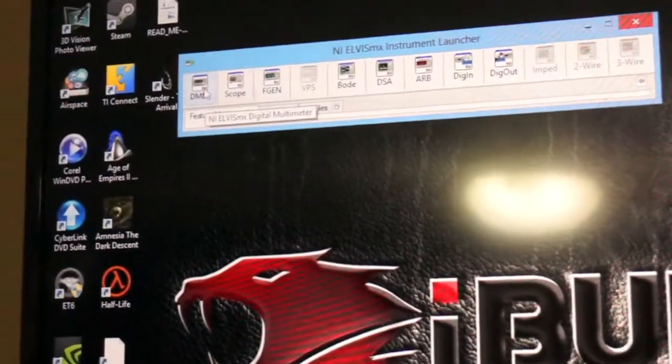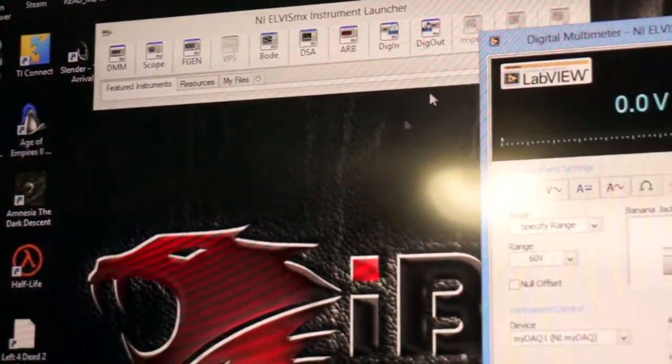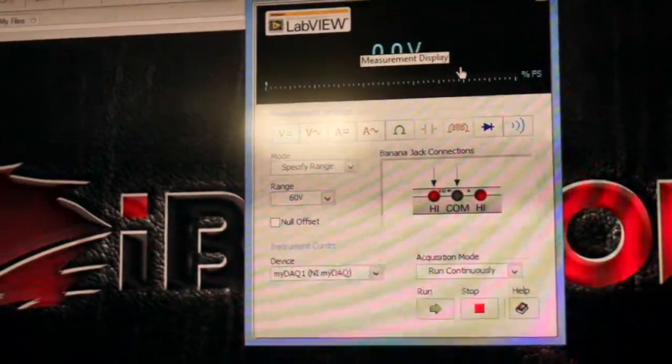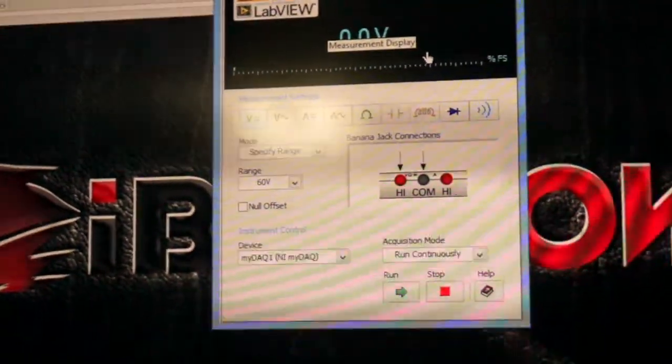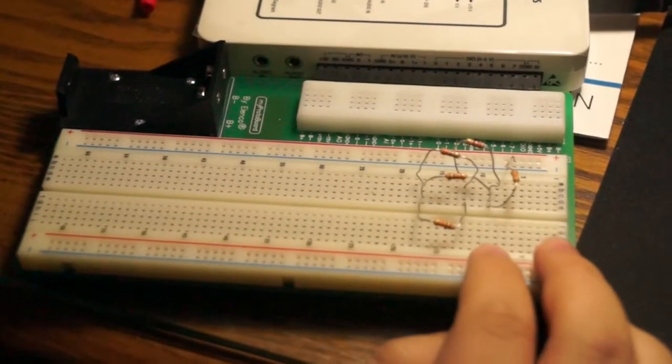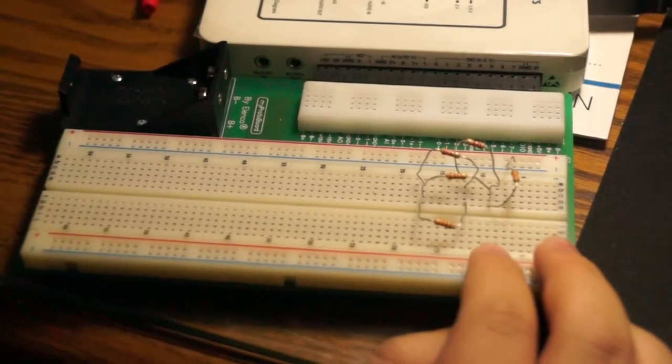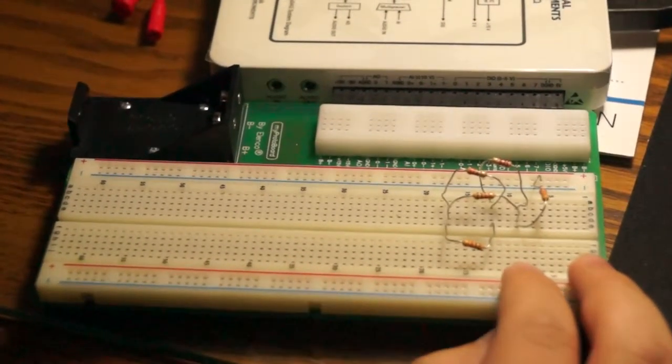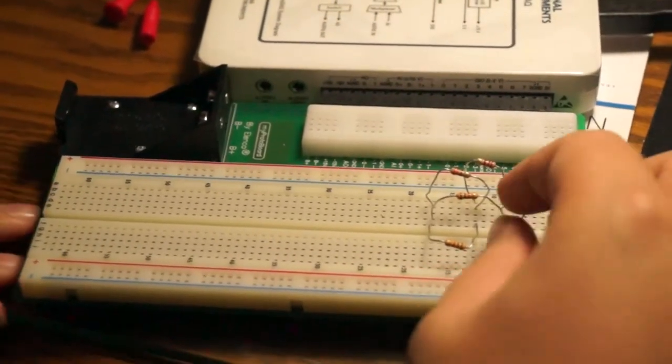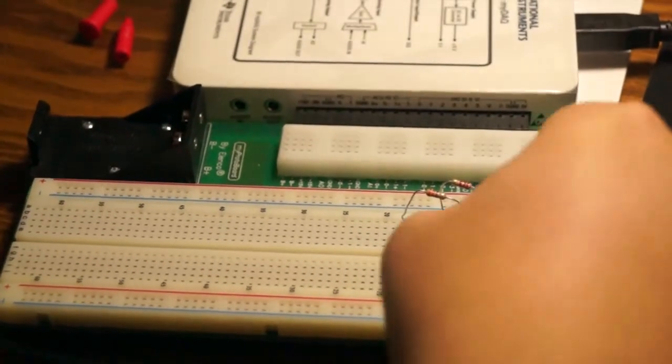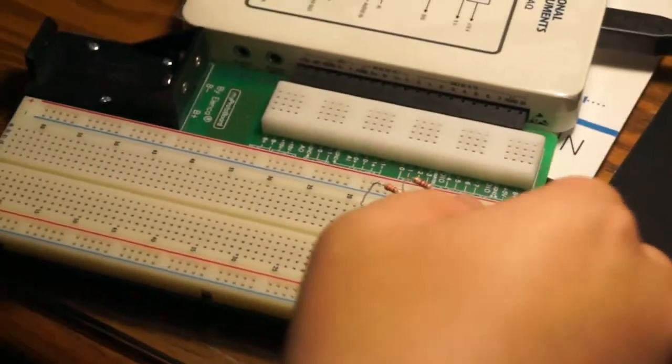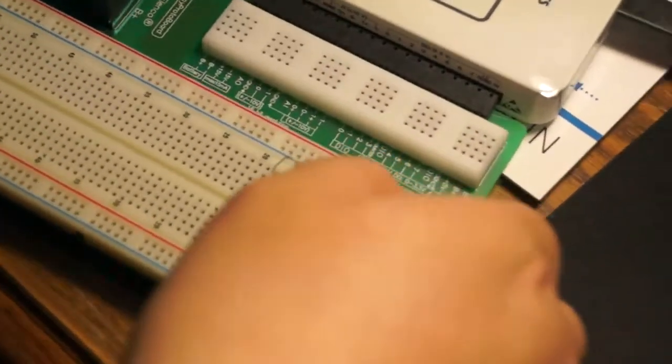Then click DMM on the left there, and here it is. Alright, for starters we're going to talk about the resistors that we need in this lab. For this you're going to need three 1kΩ resistors, one 2.2kΩ resistor, and one 3.3kΩ resistor. I have them all here.